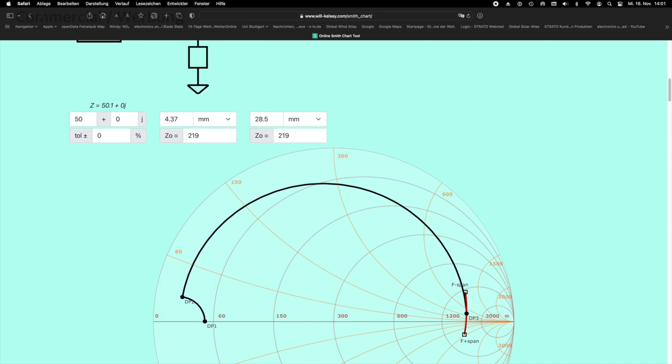And what I particularly like about this online tool is the fact that you can work with the Smith chart, but you don't have to know the effect of the individual elements by heart. Really nice. Thanks to Bill Kelsey for the nice online tool.